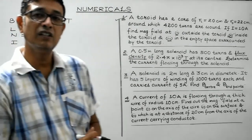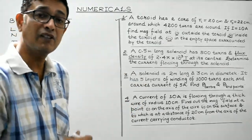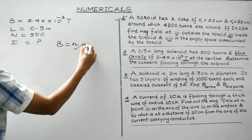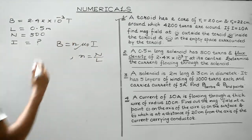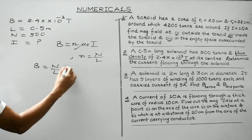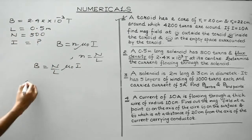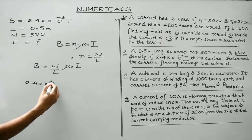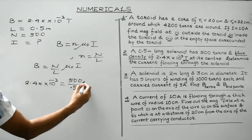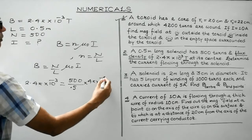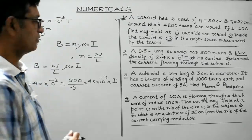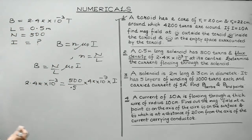Length of the solenoid is 0.5 meter and number of turns is 500. We are supposed to determine the current. This is the case of a long straight solenoid, where the magnetic field at a point inside is given by B = nμ₀I, where n is the number of turns per unit length. So B = (N/L) × μ₀ × I. Substituting: B = 2.4π × 10⁻³, N = 500, L = 0.5, μ₀ = 4π × 10⁻⁷.